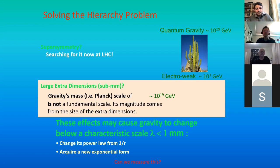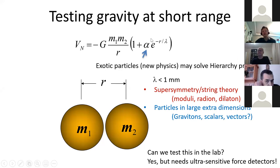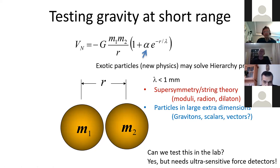It's interesting to do measurements of gravity at sub-millimeter ranges to look for beyond-standard-model effects, some of which may be related to quantum gravity or string theory. The idea is to test the Newtonian potential: if you have two masses separated by distance r, you can look for an exponential Yukawa-type correction where alpha is a dimensionless number comparing the strength of the new physics to gravity, and lambda is the Compton wavelength of a new particle mediating the short-range interaction. Things like supersymmetry and string theory naturally predict sub-millimeter ranges for such forces, requiring extremely sensitive force-sensing devices.